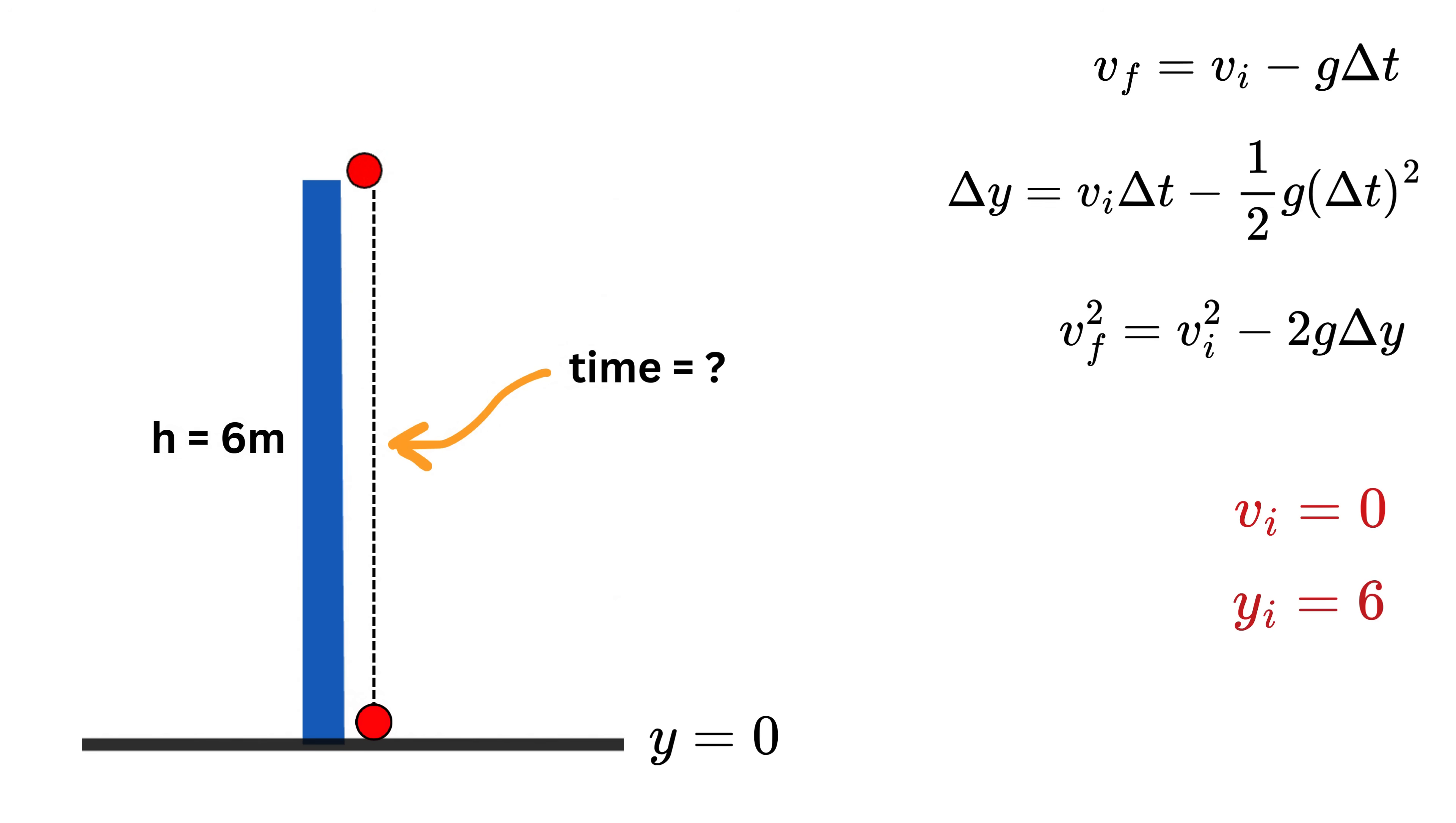That means the starting position of the ball or y_i is positive six meters. The first question we ask is how much time it takes for the ball to hit the ground? To answer this question, we must choose the kinematic relation that includes Δy and Δt but does not require knowing the final velocity. So we choose this second formula.